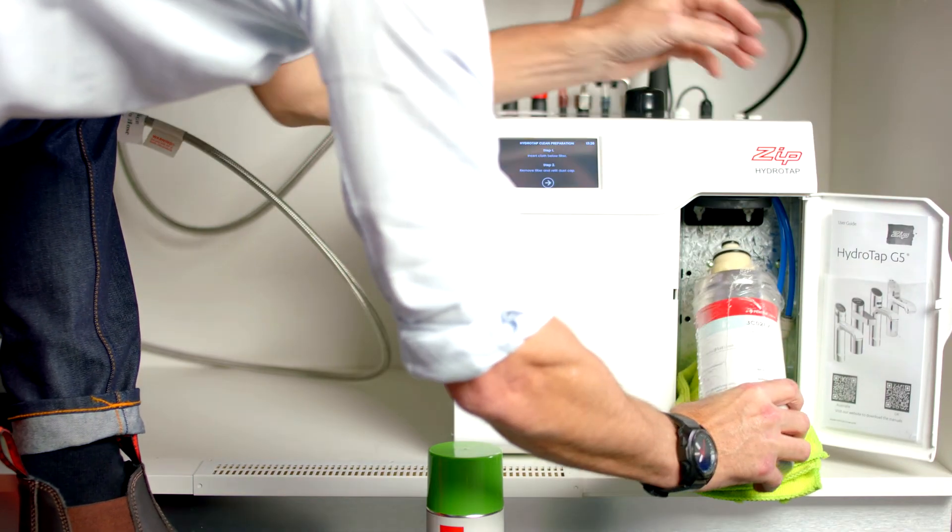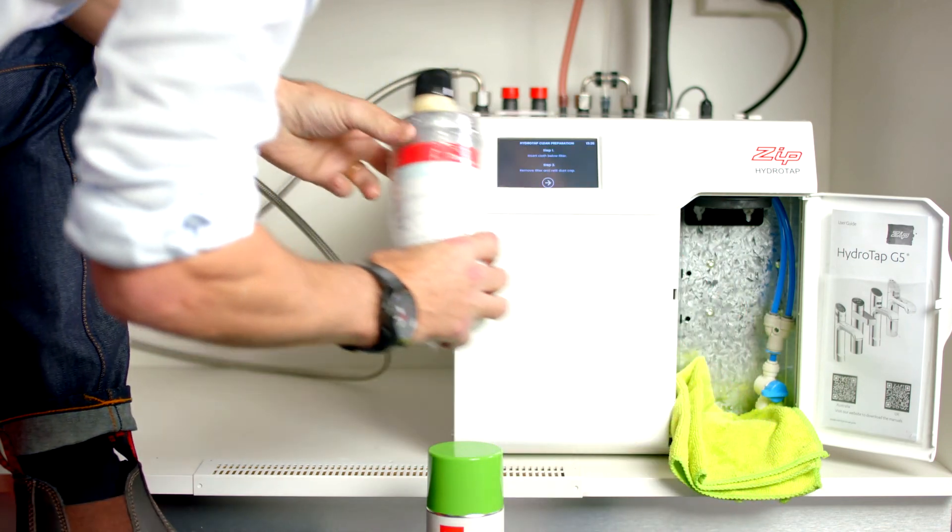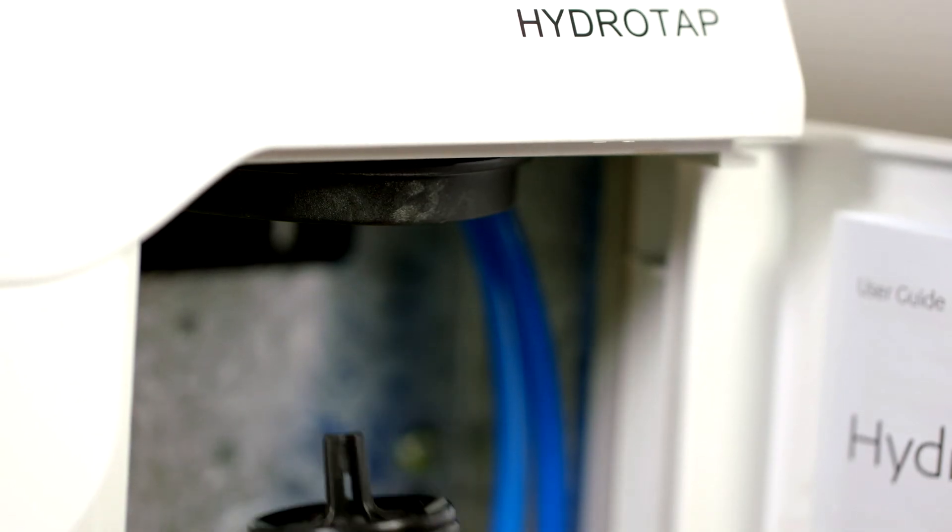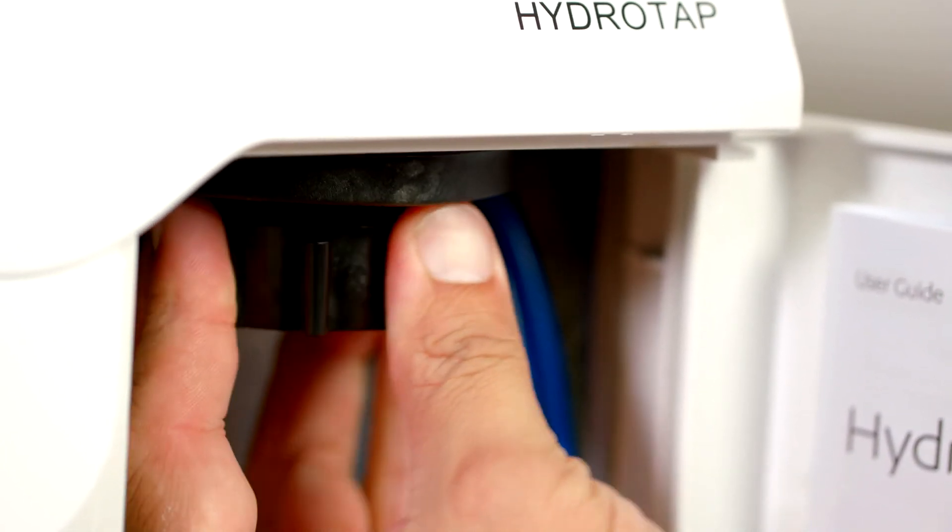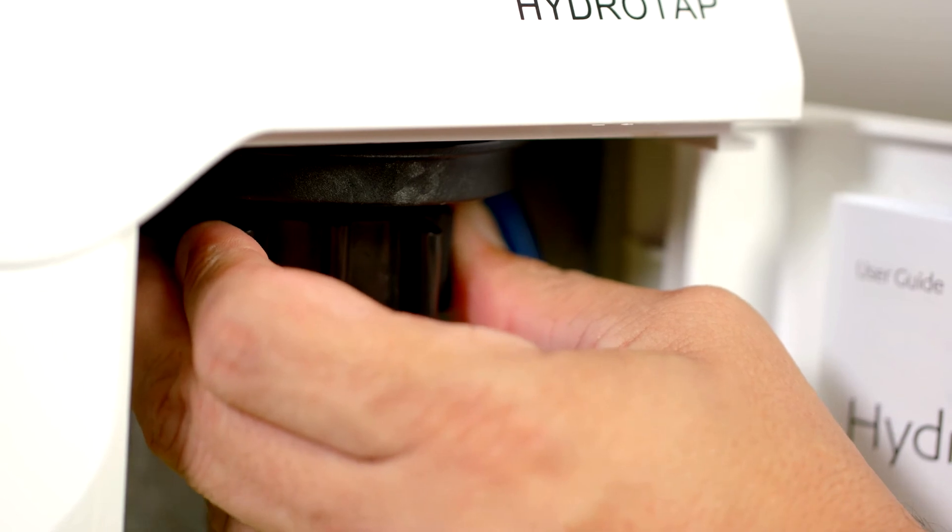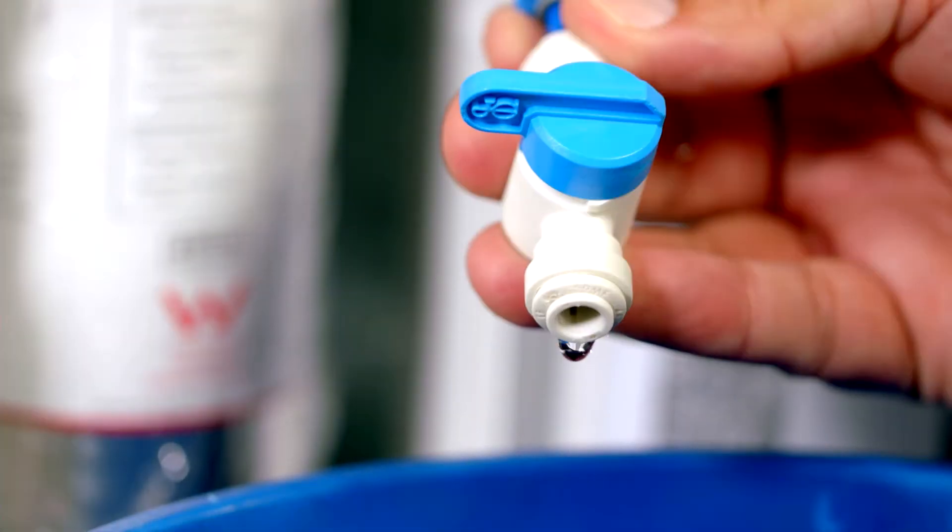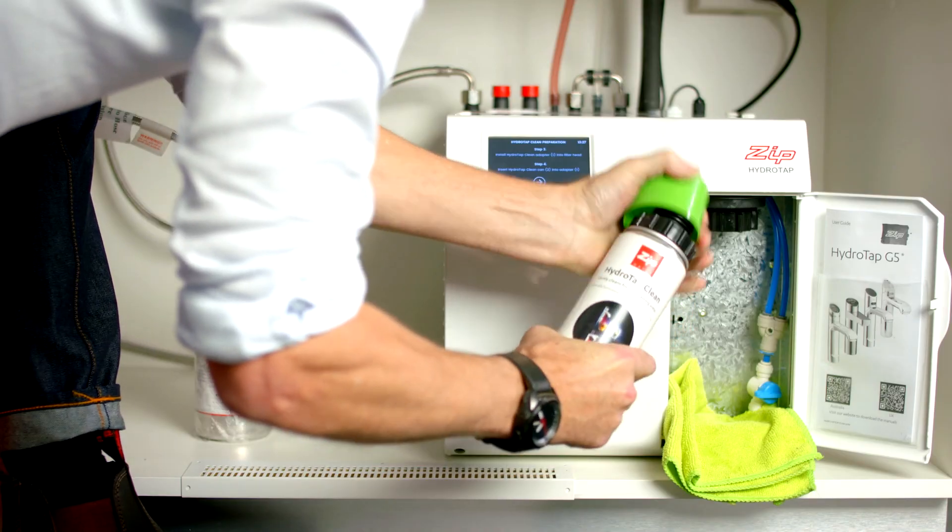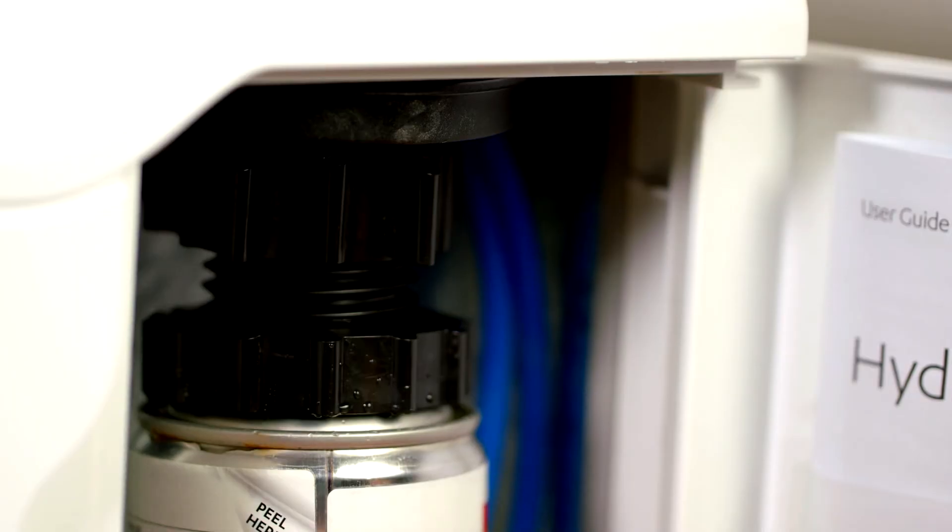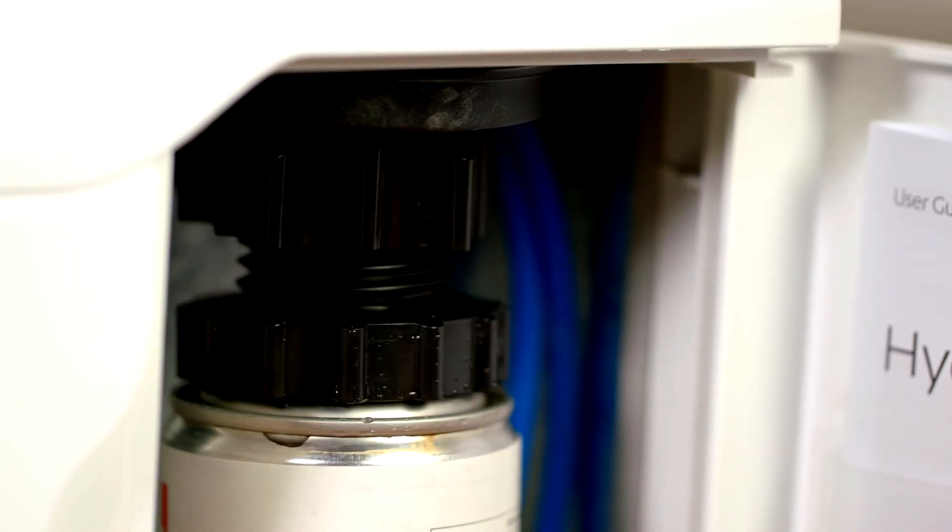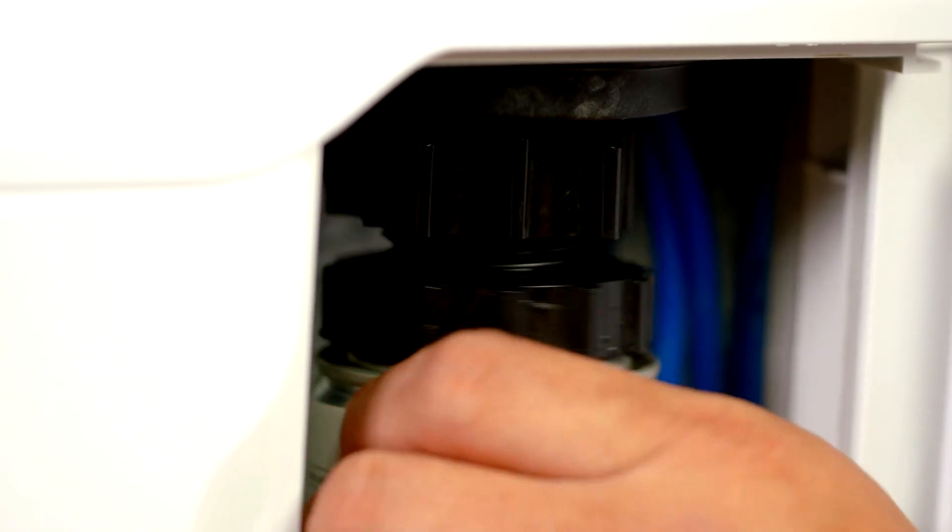Next, remove the filter and once removed, refit the dust cap of the filter to keep the filter protected. The adapter must be fitted to the internal filter head first. This adapter will fit in and turn a quarter turn before it's secured in place. Make sure the filter flush hose is off. Next, remove the green lid from the HydraTap clean can. The can is designed to screw into the bottom of the adapter. Gently fit the can underneath the adapter and tighten.